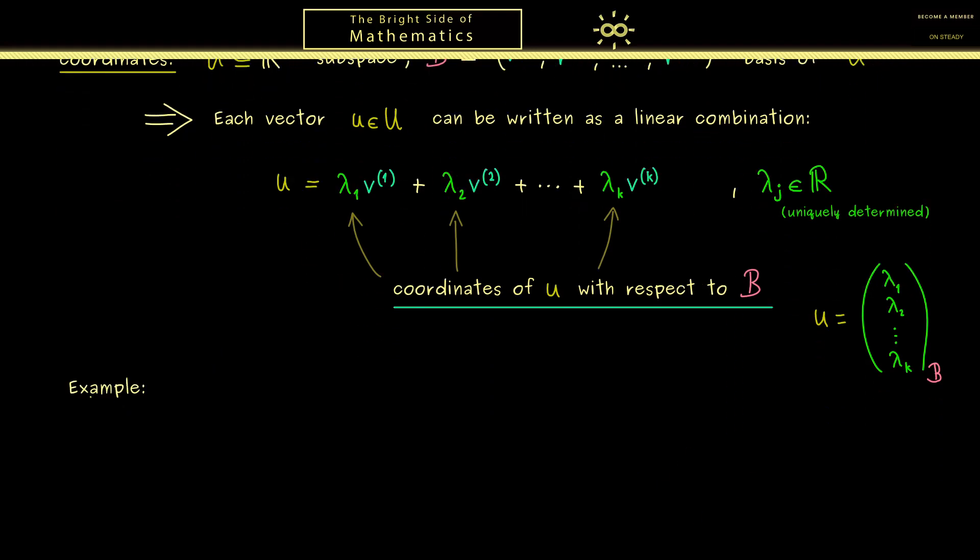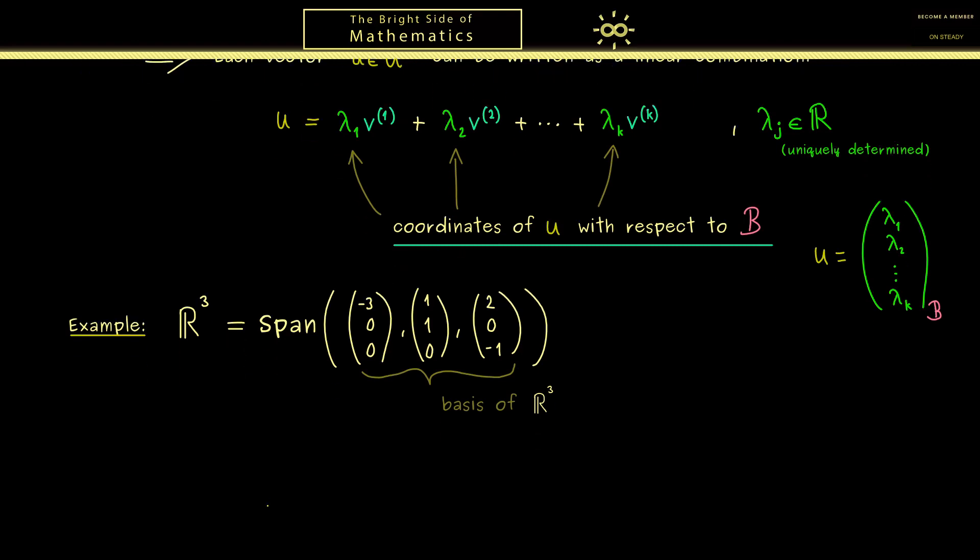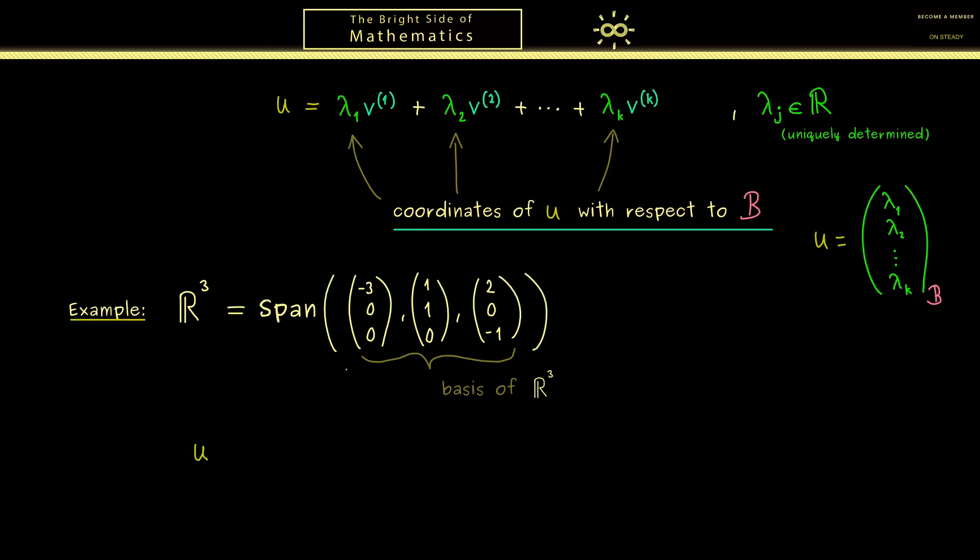To end this video here I would say let's look at an example. From the last video we already know that R³ has this non-standard basis here. And now we take a vector u and ask what are the coordinates of u with respect to this basis.